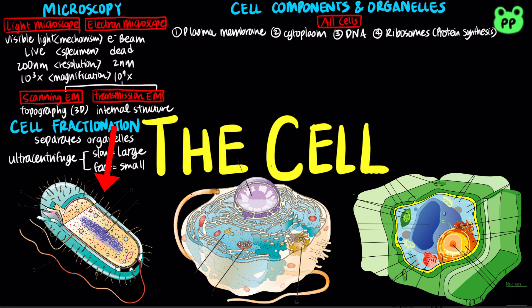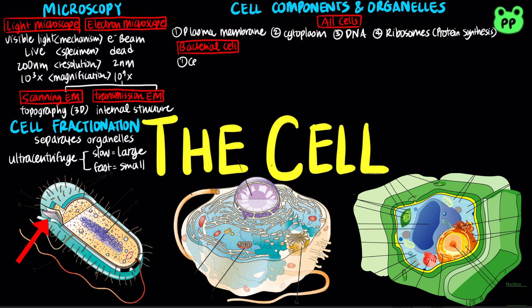Prokaryotic cells are characterized by having no nucleus and no membrane-bound organelles. A bacterial cell consists of a cell wall, which maintains cell shape, provides physical protection, and prevents the cell from bursting in a hypotonic environment.